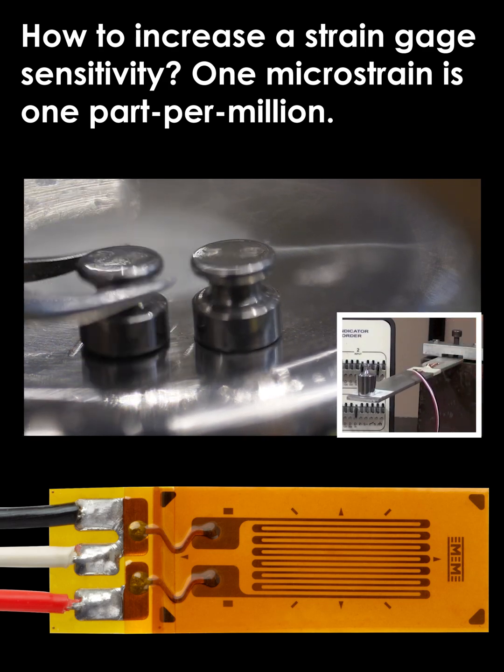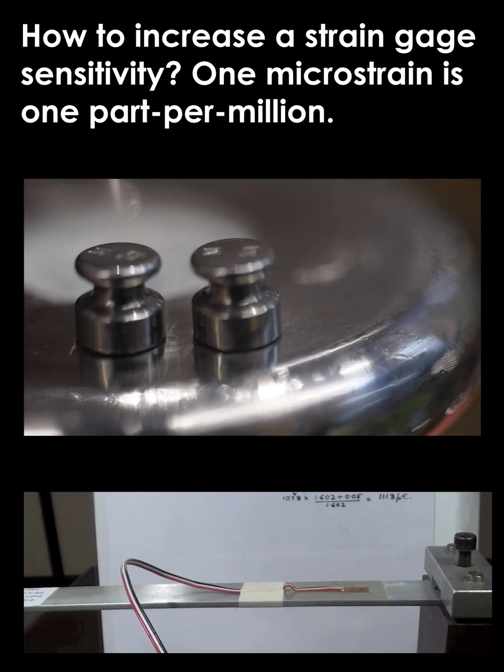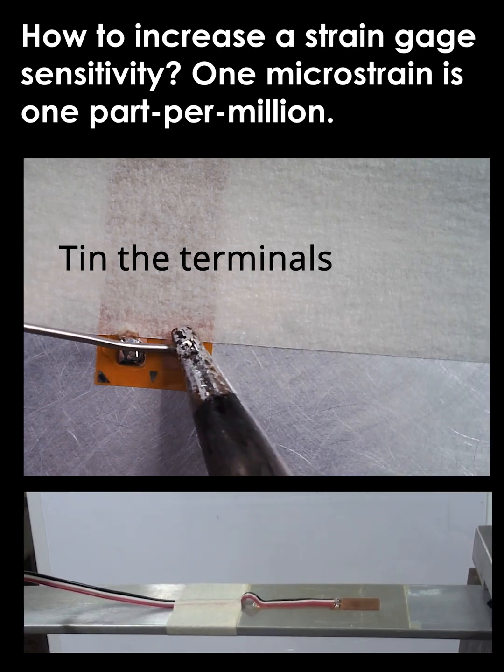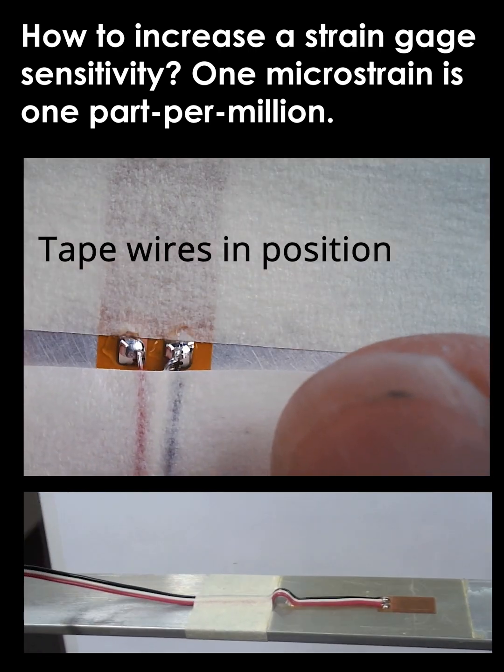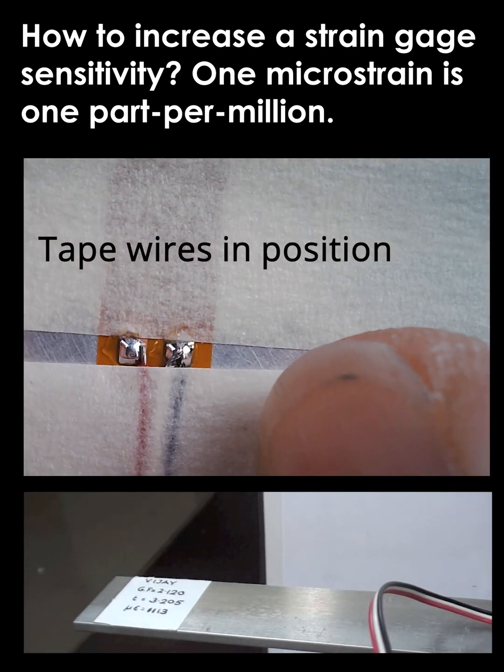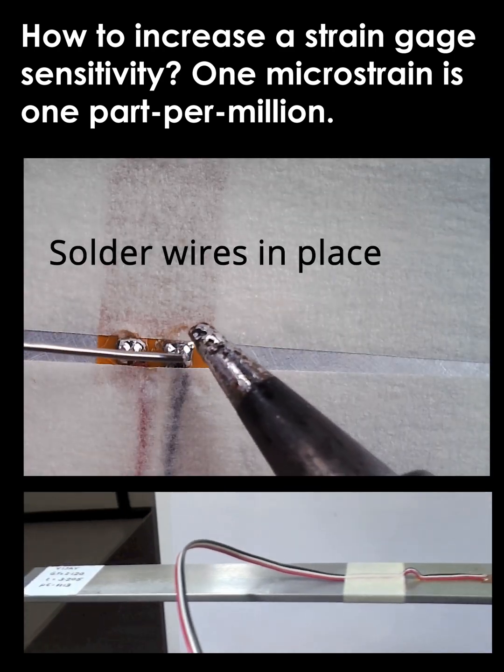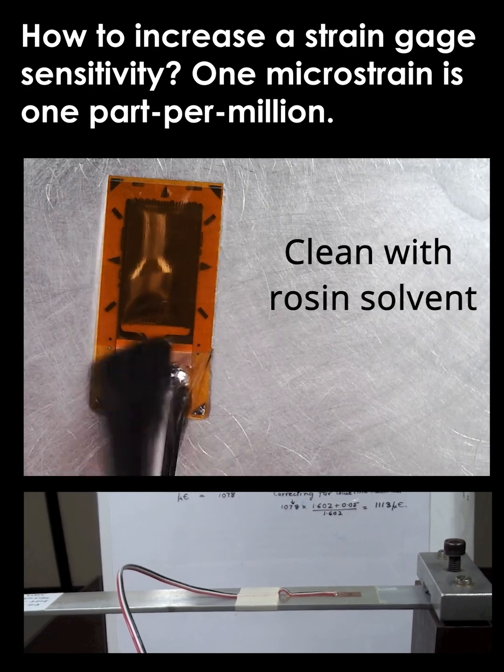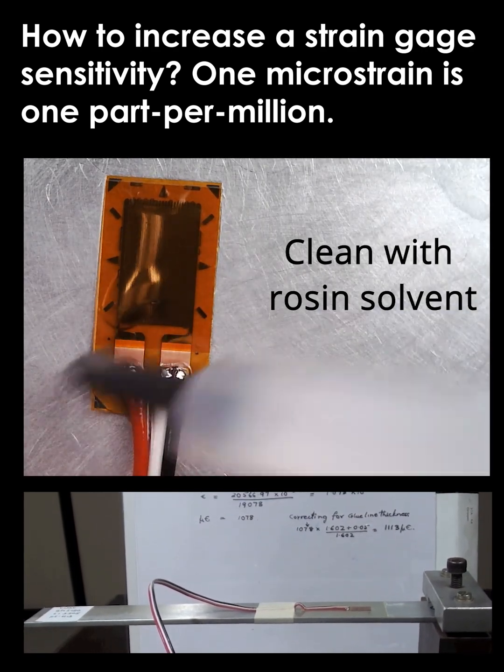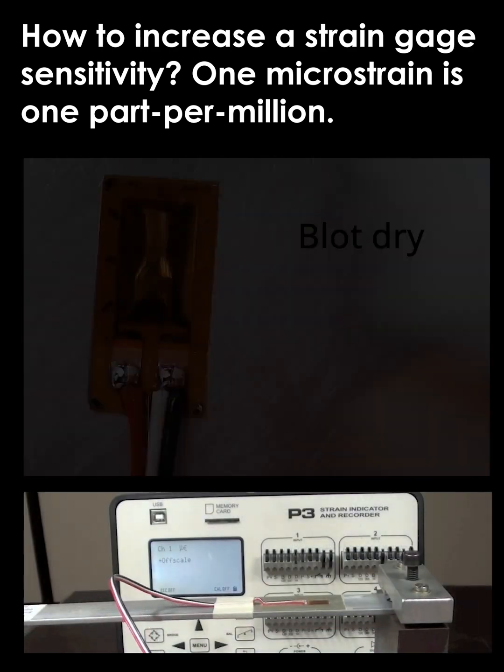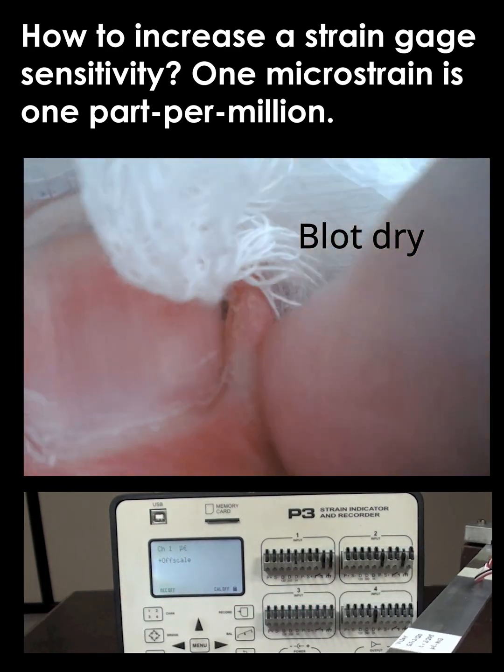This is an example to show the sensitivity of a strain gauge. Here we have an example with a CEA series strain gauge bonded onto it. When we go through the calculations, we find that the microstrain expected is 1113, and the strain gauge has a gauge factor of 2.120.